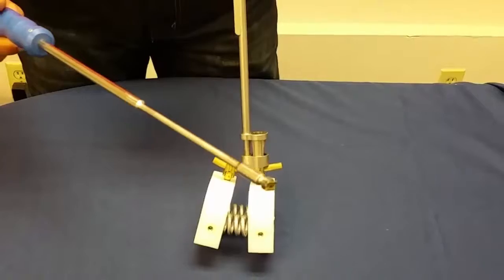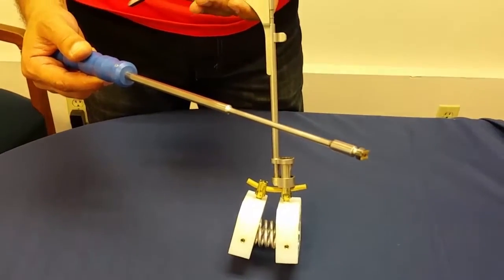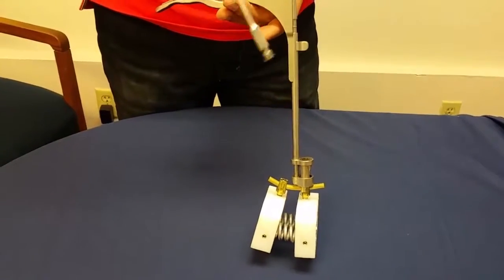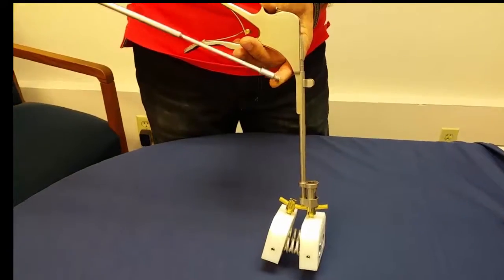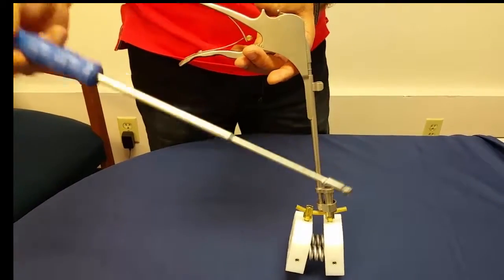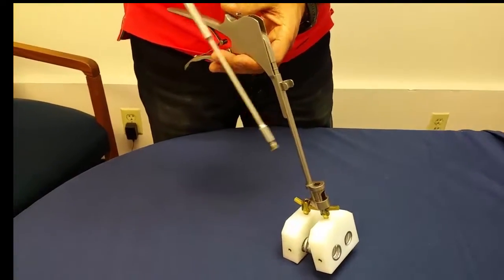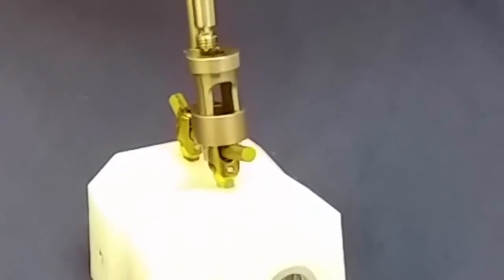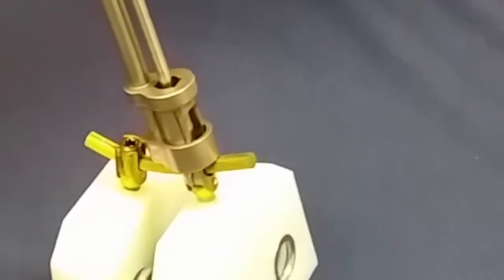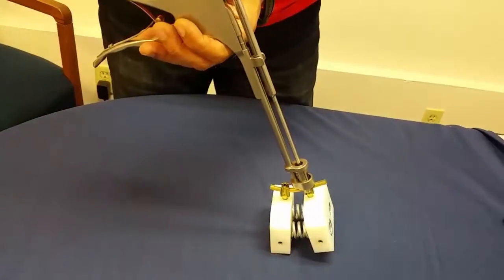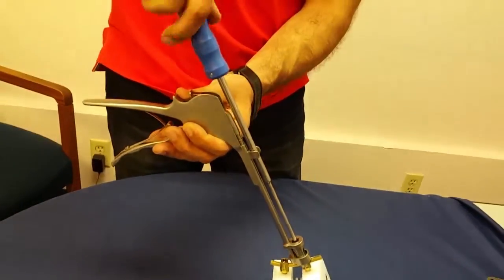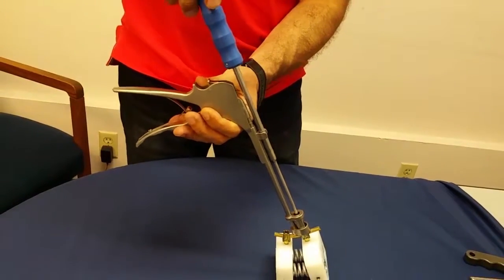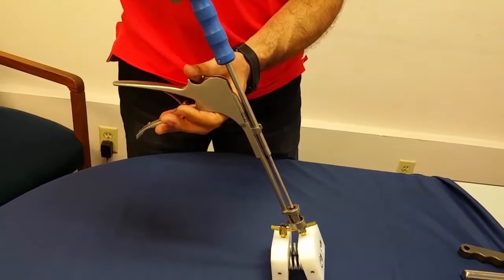At this point we take our provisional set screwdriver which holds the set screw in a friction fit so it doesn't fall out. This reduction instrument has an alignment channel to guide the placement of the set screw. The set screw is turned and as soon as you hear a couple of squeaks that's sufficient.